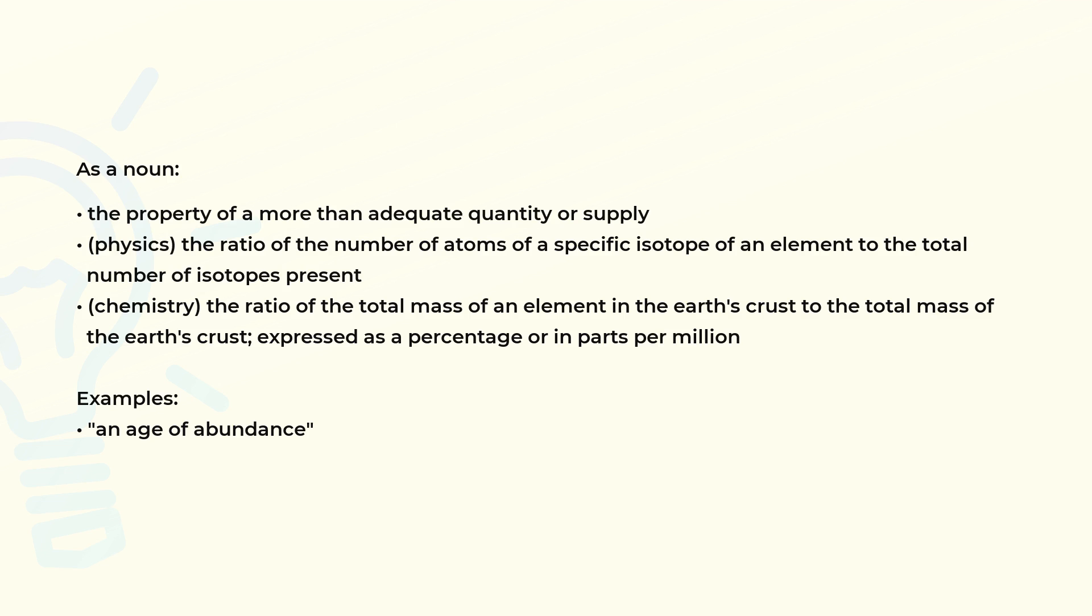In chemistry, the ratio of the total mass of an element in the Earth's crust to the total mass of the Earth's crust, expressed as a percentage or in parts per million.